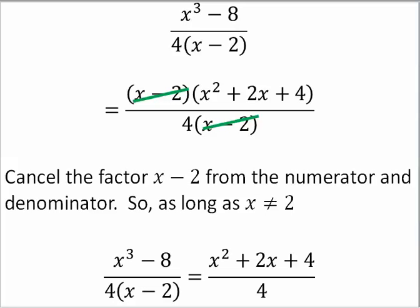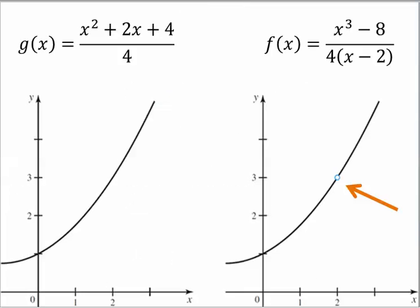When we do that, again, we get two functions that are equal everywhere except at x equals 2. The function on the right-hand side, f, that's the one that we're trying to find the limit as x goes to 2. As I said, 2 is not in the domain of the function. You cannot put 2 into the function f. And you can see in the graph there's a hole where x equals 2.